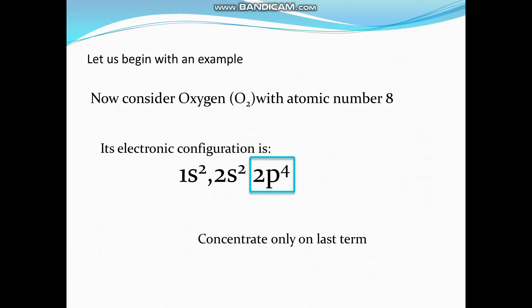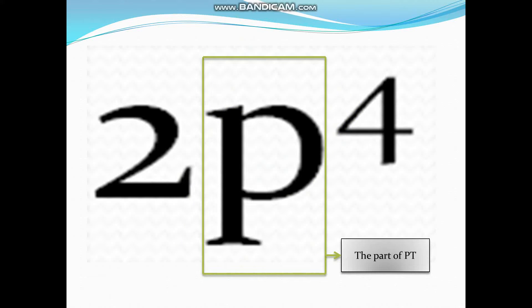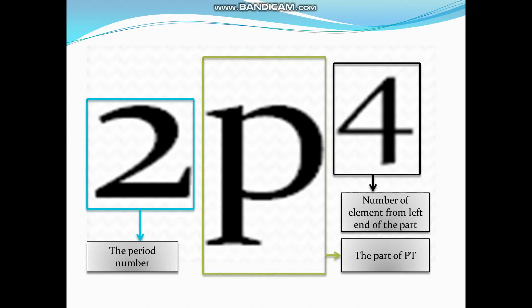Concentrate only on the last term that is 2p4. In 2p4, p denotes the part of the periodic table that is p block. 2 denotes the period number that is second period and 4 denotes the number of element from the left end of the part.